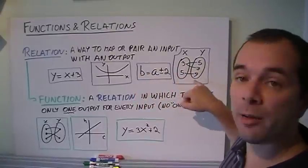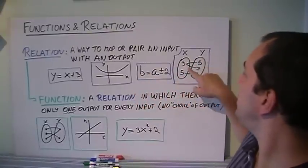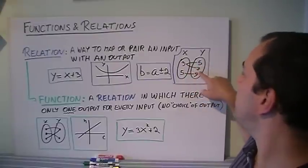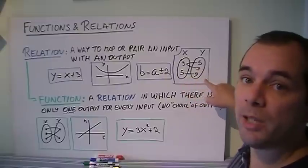And if I have a mapping diagram like this, there's a relation that if I give you an input of 3, the output could be 5 or it could be 7, or an input of 5, the output could be 9.